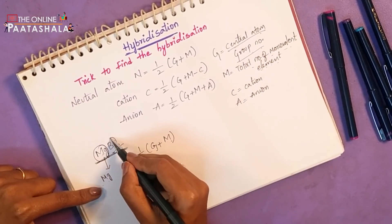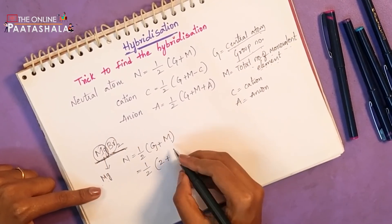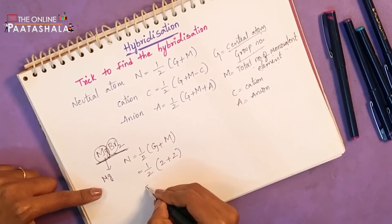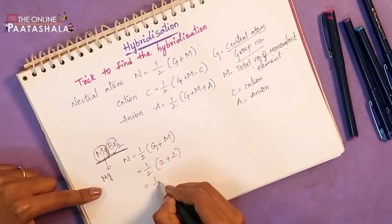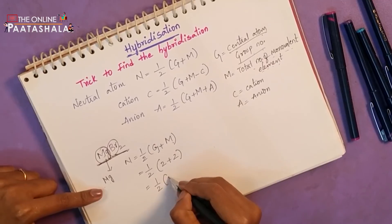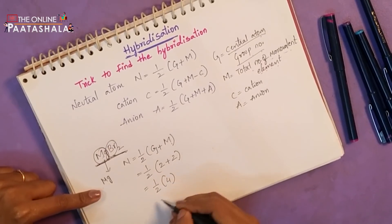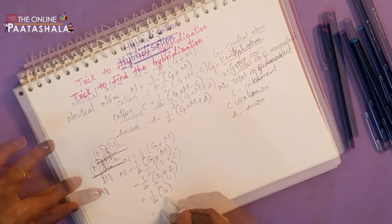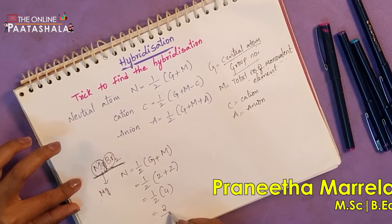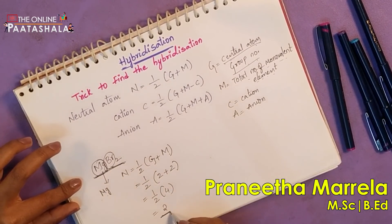What is M? Total number of monovalent elements. How many monovalent elements are present here? Again 2. So, 1/2 of (2 + 2) = 1/2 of 4 = 2. You have got 2.